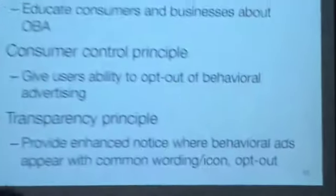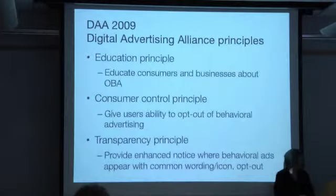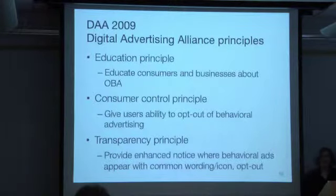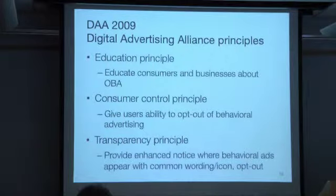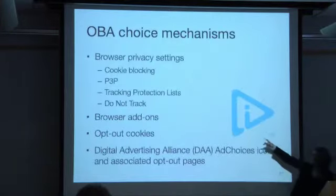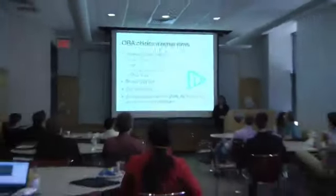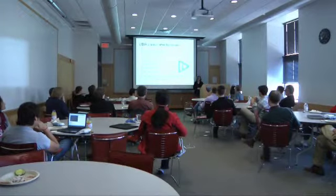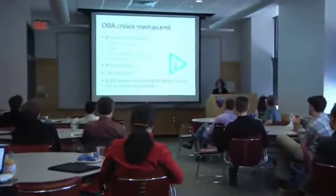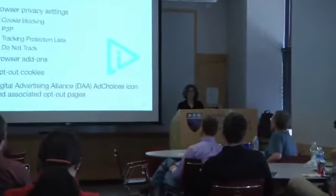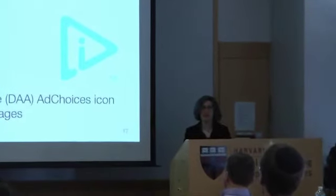Another thing happening is the Digital Advertising Alliance, an industry group of online advertisers. They came up with a set of principles in 2009 which they felt were doing the right thing and the kinds of things the FTC was asking them to do — you have to tell people about what you're doing, give consumers control, be transparent. As part of that, they've come up with a whole program that has an icon you're supposed to see on ads. I showed this icon to chief information security officers in an exec ed class a few weeks ago, and they all said they'd never seen it before.